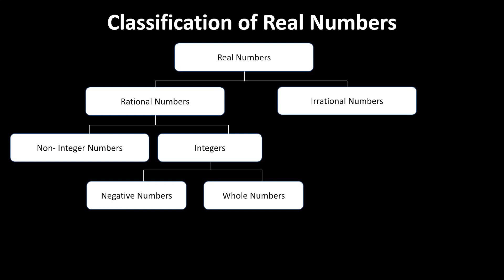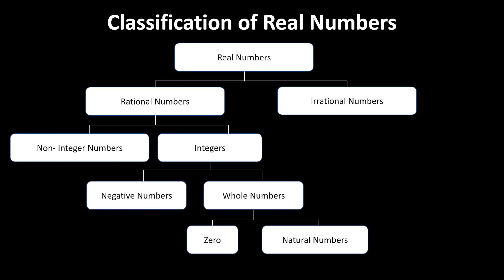Integers are basically a collection of negative numbers along with the whole numbers. Negative numbers include minus 1, minus 2, minus 3, and so on. Whole numbers start from 0 onwards — 0, 1, 2, 3. Examples include 0, 1, or 100. Whole numbers basically constitute 0 as well as all the natural numbers.